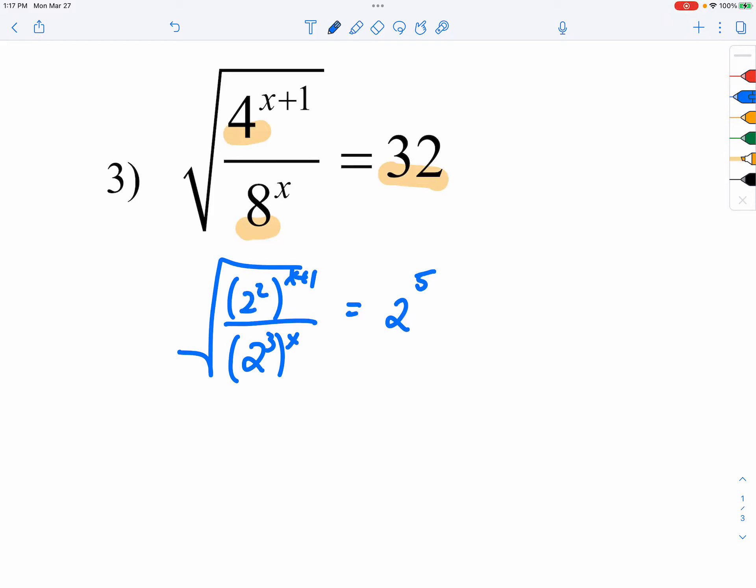And I will replace the 4, the 8, and the 32 with 2 to the corresponding powers. So, 2 squared for 4, 2 cubed for 8, and 2 to the 5th power for 32.